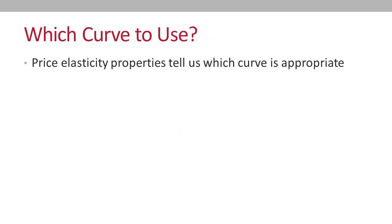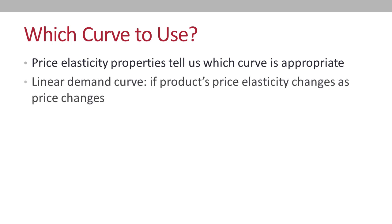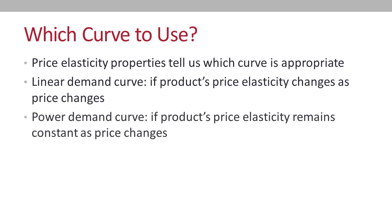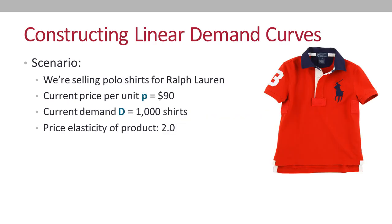So what's the big differentiator we can use to decide between the two types of demand curve? It's the product's price elasticity. If the product's price elasticity changes when the price changes, we need to use a linear demand curve. If the product's elasticity remains constant regardless of price, we need to use a power demand curve. So let's start by constructing a linear demand curve.